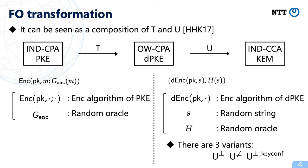As shown by Hofheinz et al., FO transformations can be decomposed into two transformations T and U. T converts an IND-CPA secure public-key scheme into a one-way CPA secure deterministic public-key scheme by using a random oracle. U converts a one-way CPA secure deterministic public-key scheme into an IND-CCA secure scheme by using a random oracle. Three variants of U have been considered.